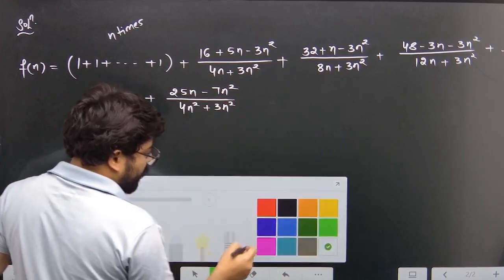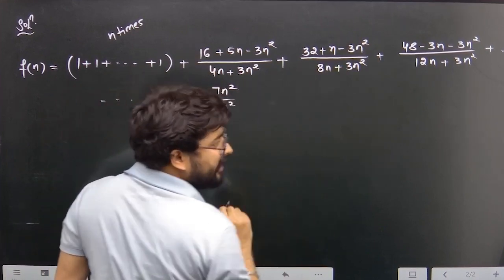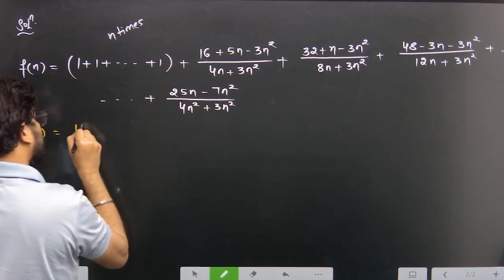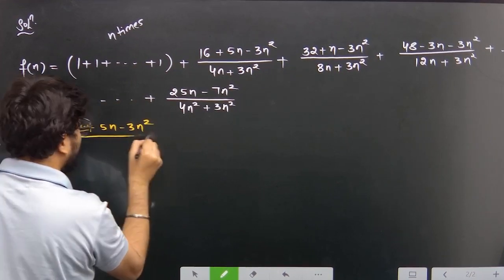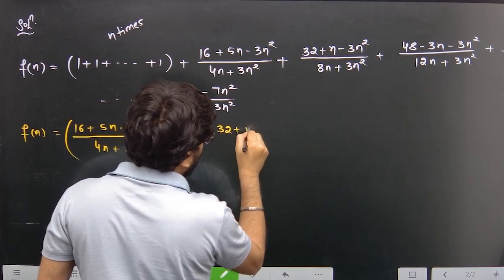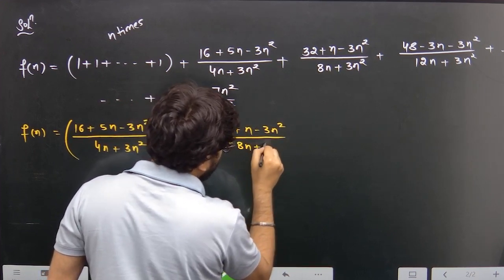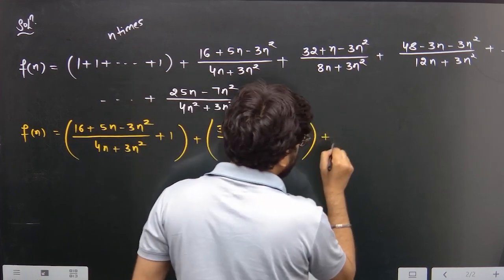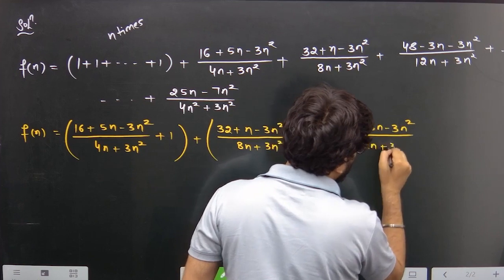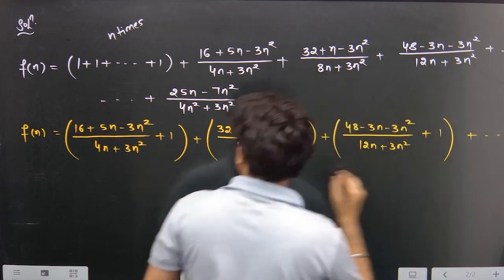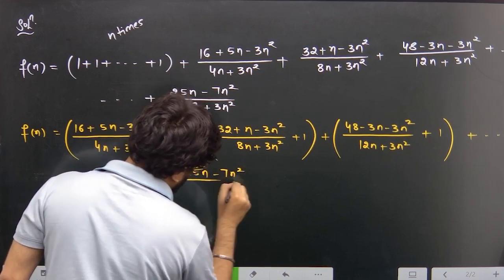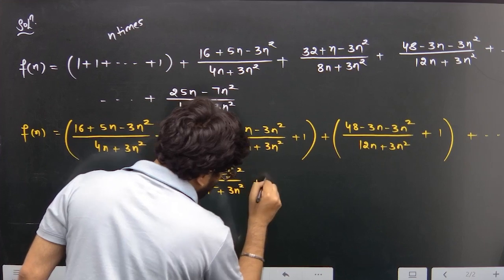There are a total of n number of terms. These include (3n + 4n + 3n²) terms, plus (32 + n - 3n²) upon (8n + 3n²+ 1), plus (48 - 3n - 3n²) upon (12n + 3n² + 1), and the last term is (25n - 7n²) upon (4n² + 3n² + 1).